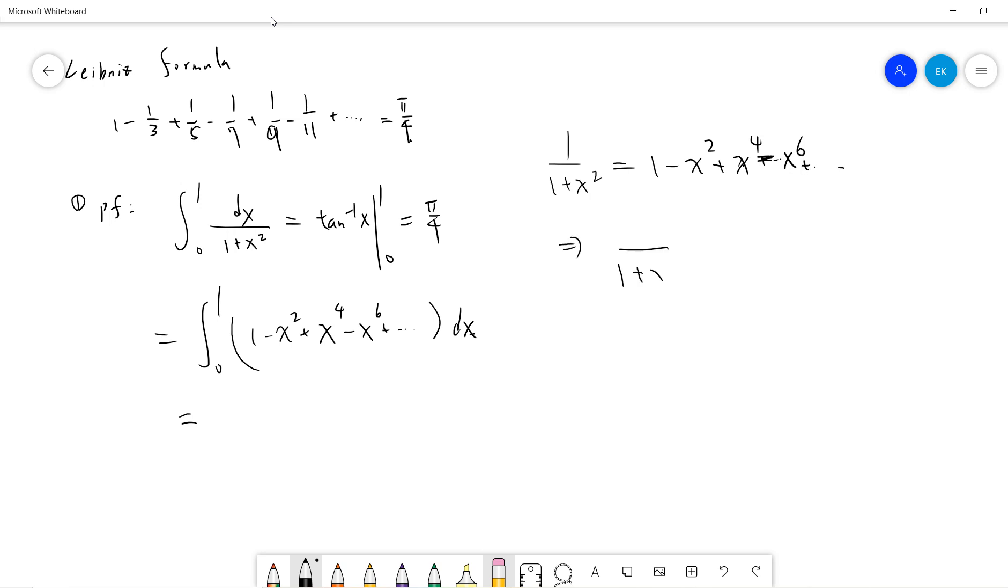The idea is to truncate it to some finite sum. Let's say we go to n. The problem is finding qn, the error term.